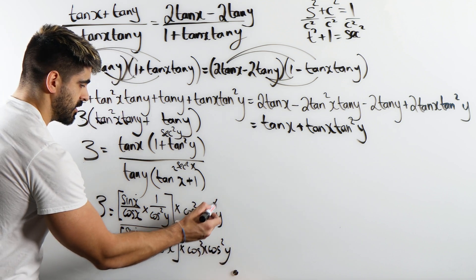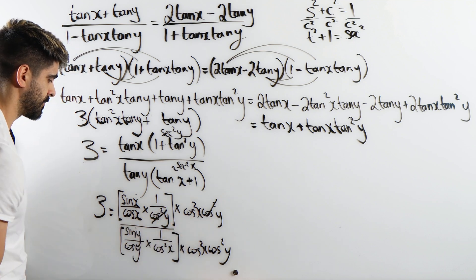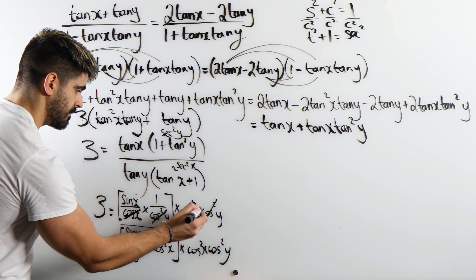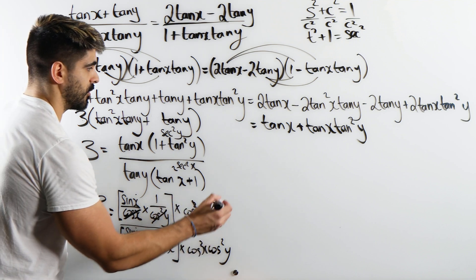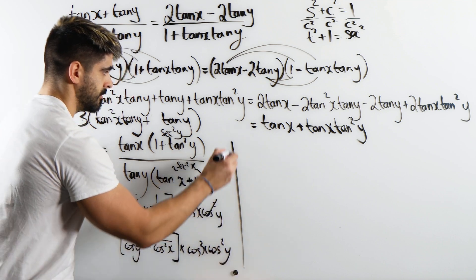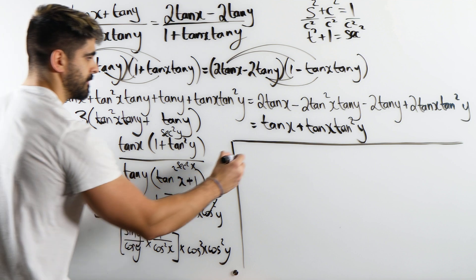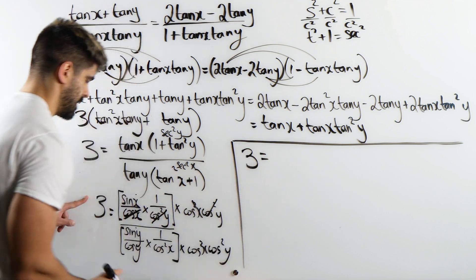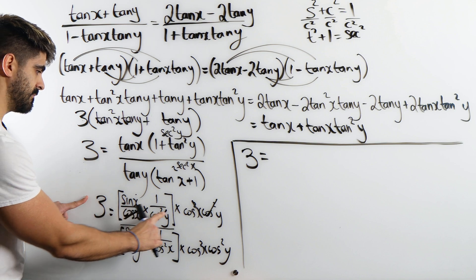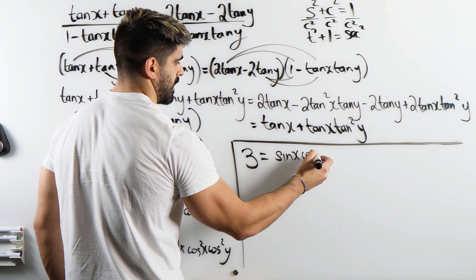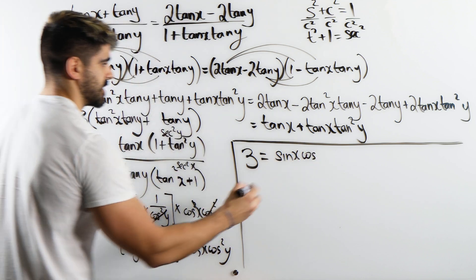All right, so the cos squared y is going to cancel with that. This cos is only going to cancel with that once. Okay, so what have we got? Let's move over here. We have 3 is sine times cos. Sine x cos x.